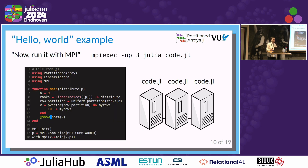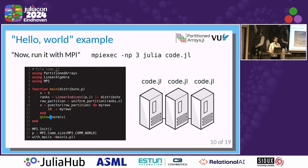Once everything works and you are happy with your code and have a prototype working, you can put all this code into a main function and then use a small extra piece of code at the bottom with MPI. Now you change the backend and run this with MPI. This file is now an MPI application that you can launch with mpiexec — in this case with three ranks — and it's going to run on your supercomputer.